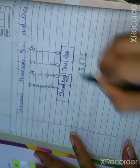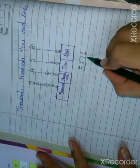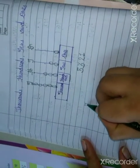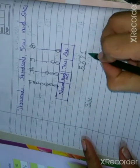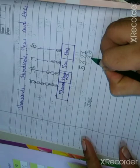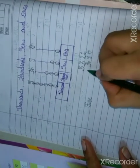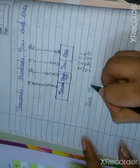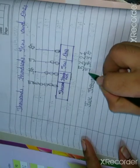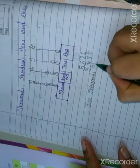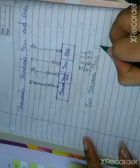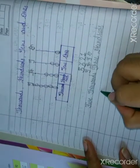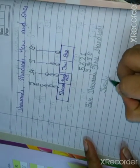So you have to write five. And as per number names, you write this value. Five is in which place? This is your ones, this is your tens, this is your hundreds, and this is your thousands — five thousands. So you write: five thousands, three hundreds, twenty-one.